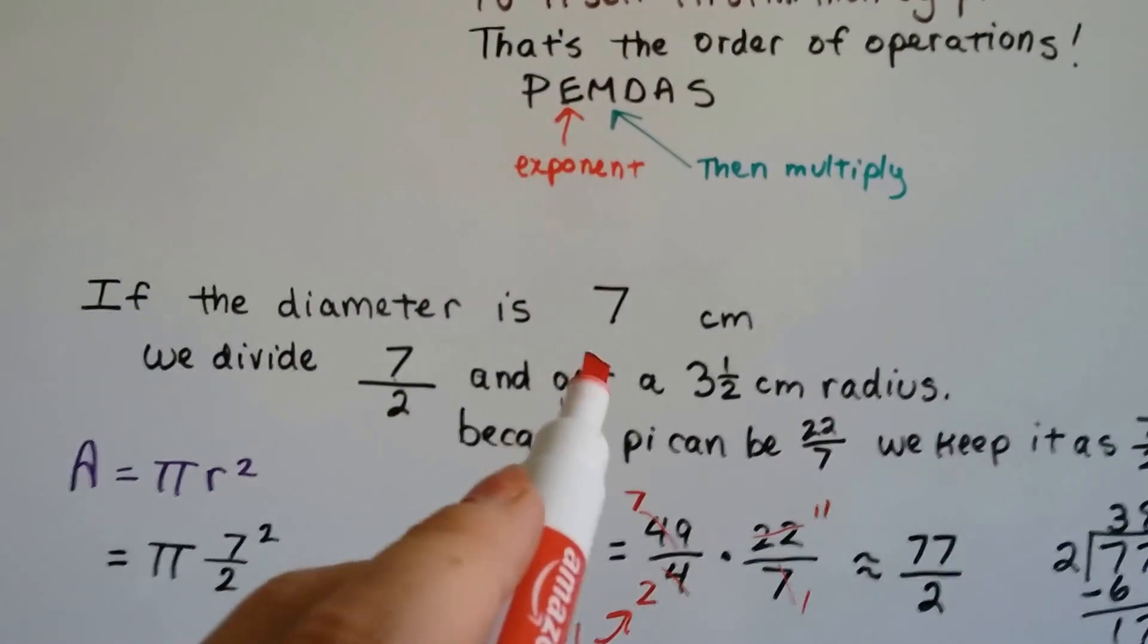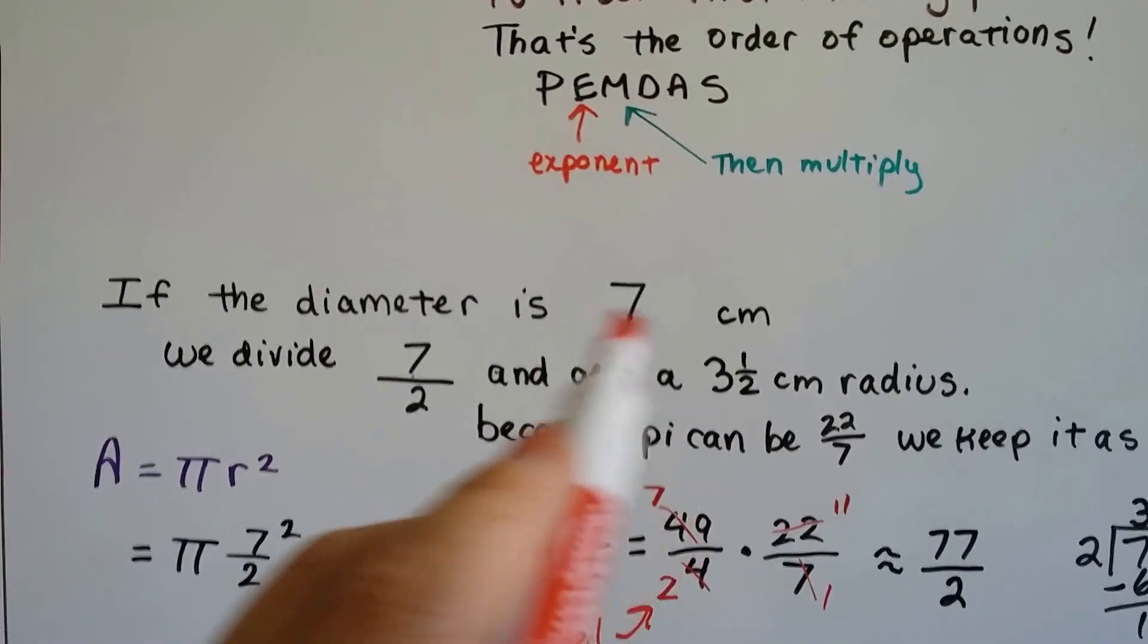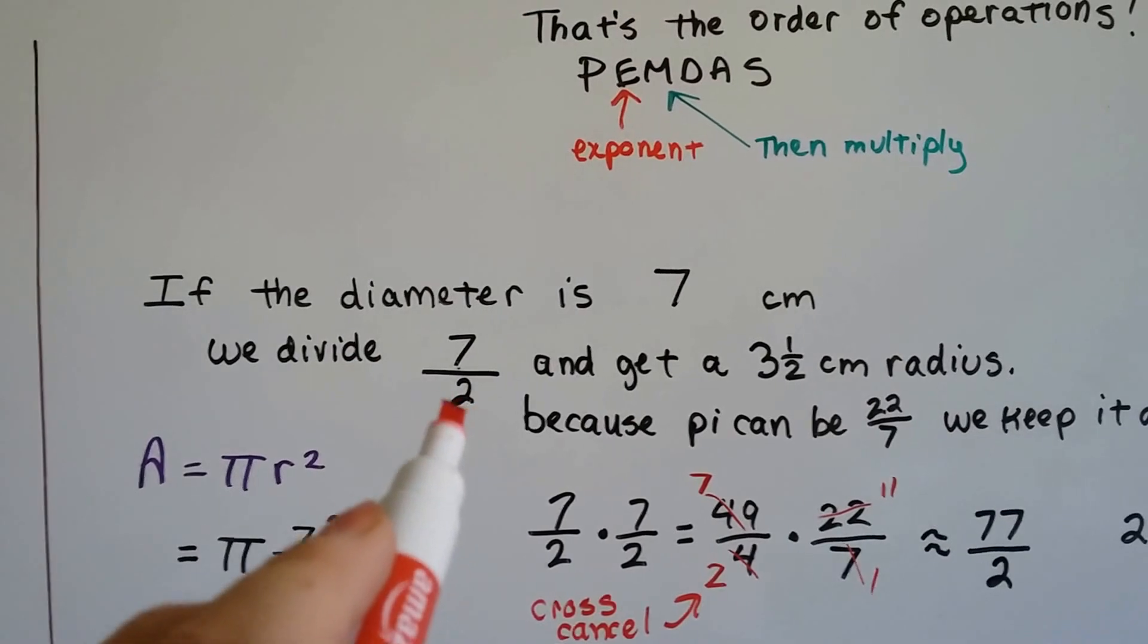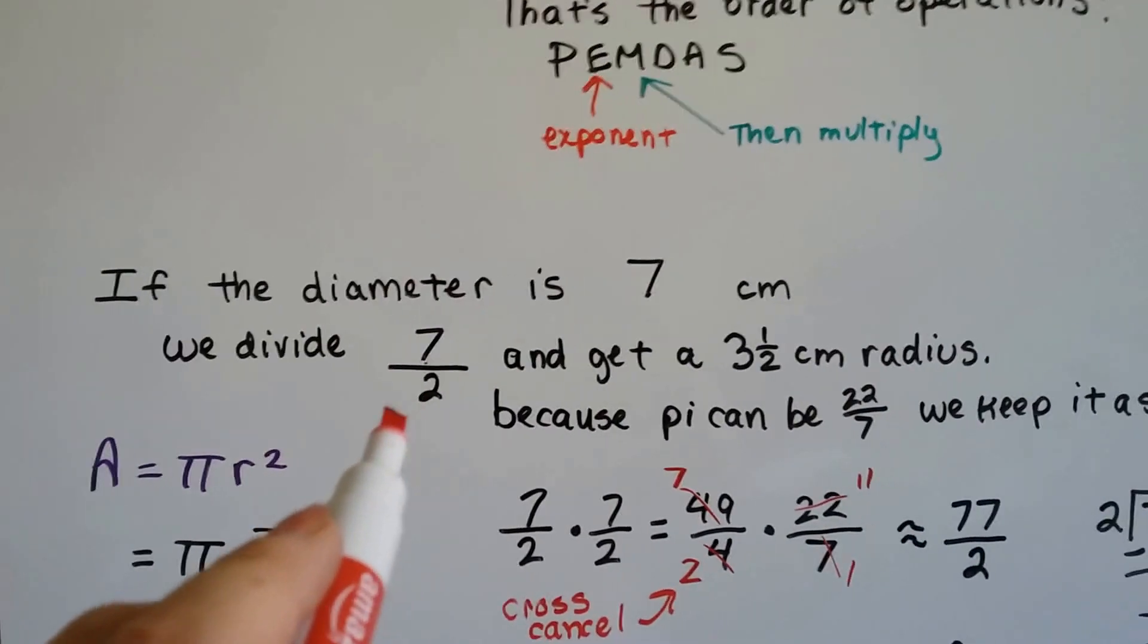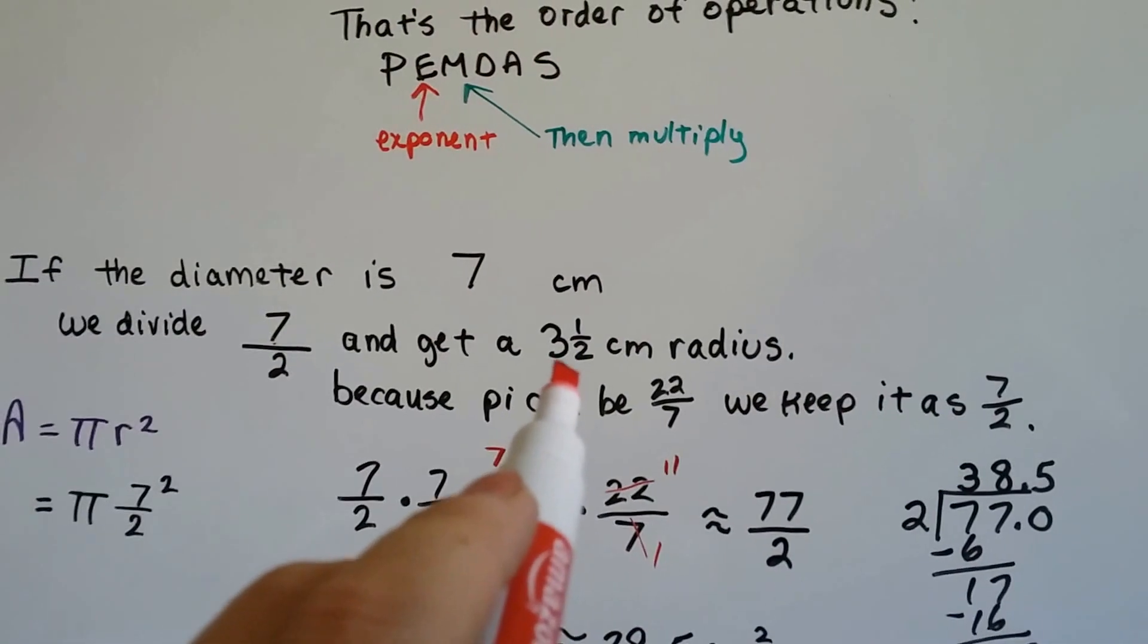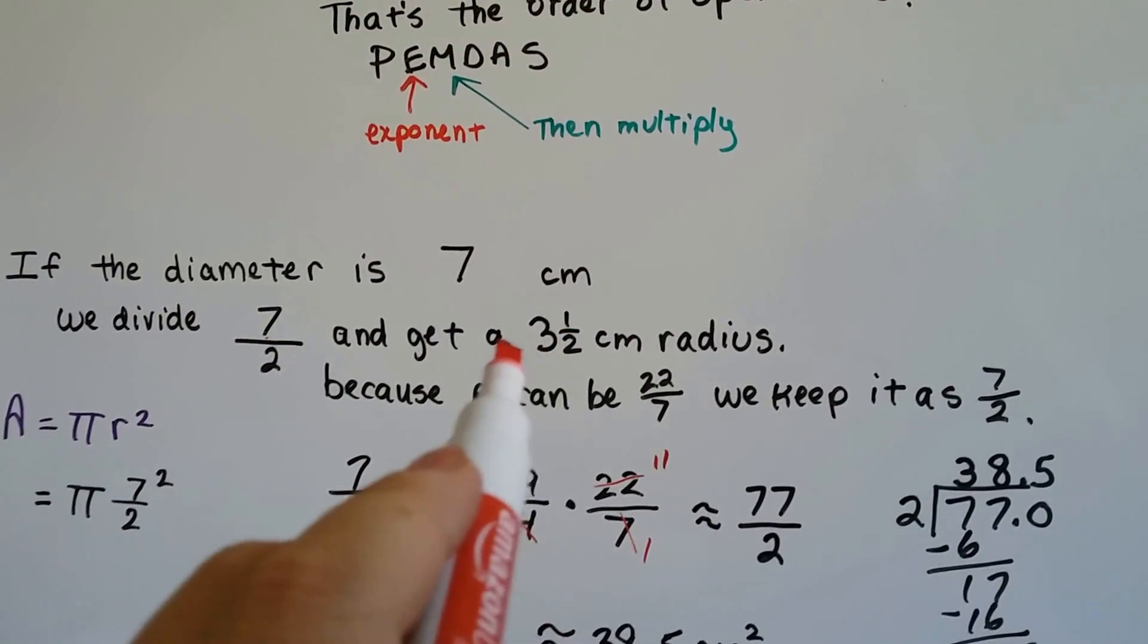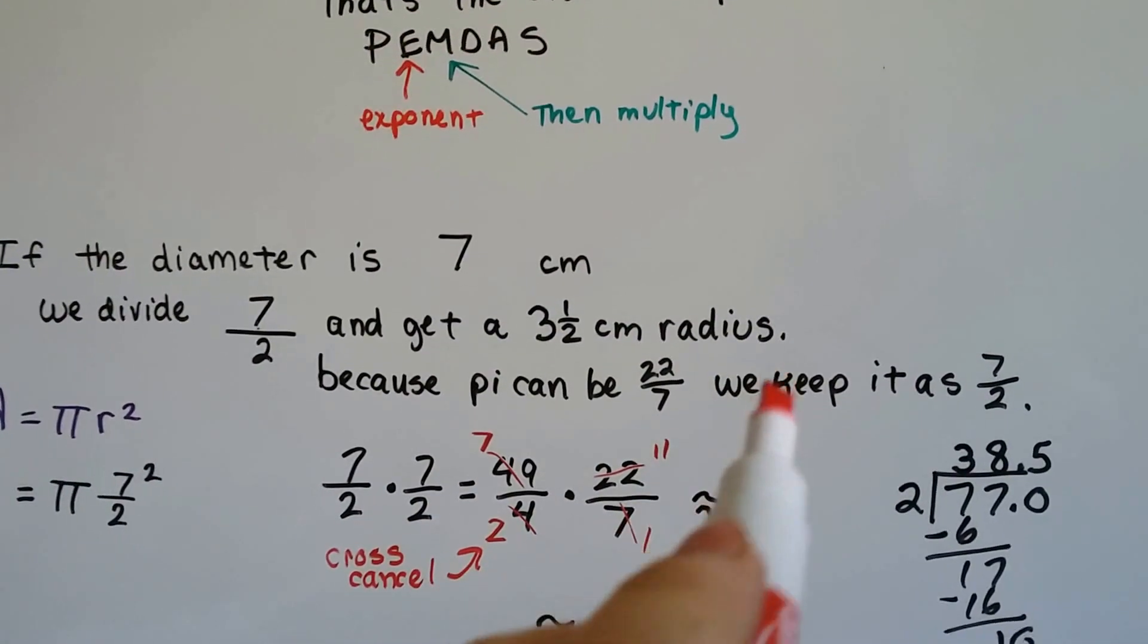If the diameter is 7 centimeters, well then the radius is half of that, isn't it? So we divide 7 by 2. Remember fractions are little division problems. That would be 3 and a half, wouldn't it, as a mixed number? 7 over 2 would be a 3 and a half centimeter radius.